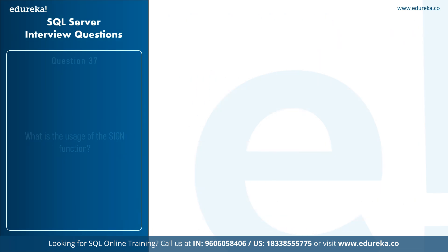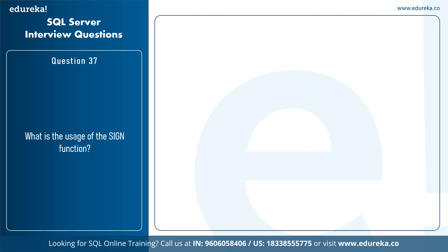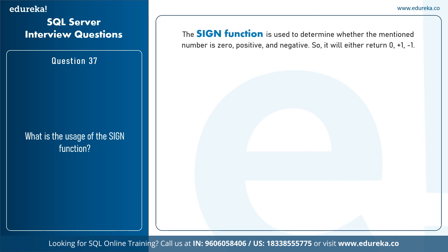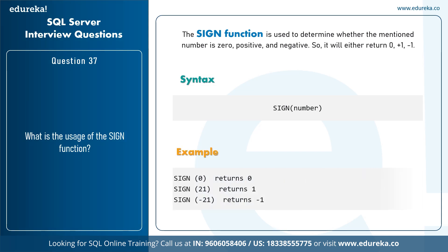The next question is: what is the usage of the SIGN function? The SIGN function is used to determine whether a number is zero, positive, or negative. It returns 0, +1, or -1. The syntax is 'SIGN(number)'. For example: SIGN(0) returns 0, SIGN(21) returns 1, and SIGN(-21) returns -1.